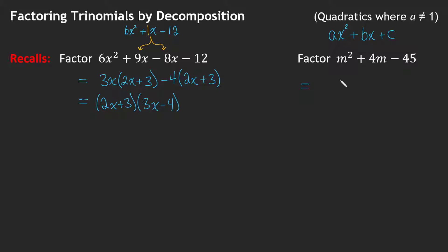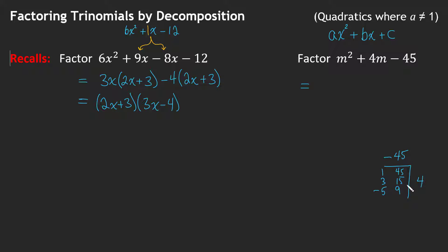We are also going to practice product and sum. This is a monic trinomial — there's no GCF and A equals 1. I'm going to find the two numbers that are factors of negative 45 and add to the middle term, which is 4. Simple factors like 1 and 45 won't work. When we get to 5 and 9, we see that negative 5 times 9 gives negative 45, and negative 5 plus 9 gives 4. So the factorization is (m − 5)(m + 9).